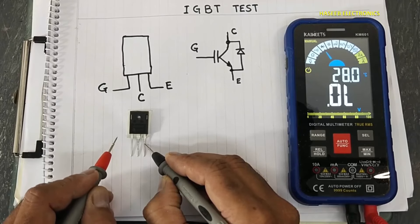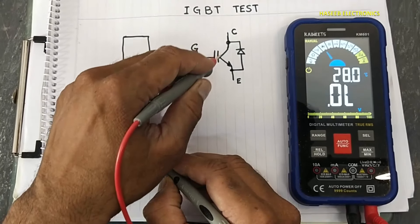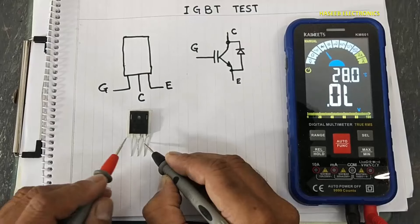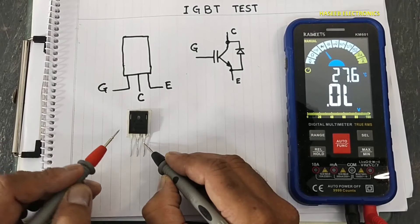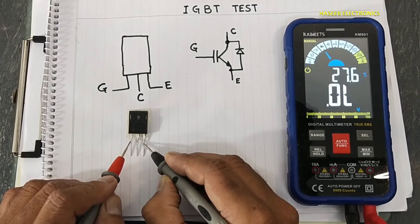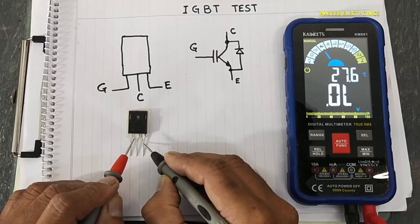Now just touch red lead to the gate, come back to the collector. It is giving 1.9 volt drop. Before this it was open.